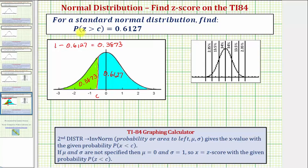Another way to think of this: if the probability of z being greater than c equals 0.6127, this also tells us the probability of z being less than c is equal to one minus 0.6127, which equals 0.3873.